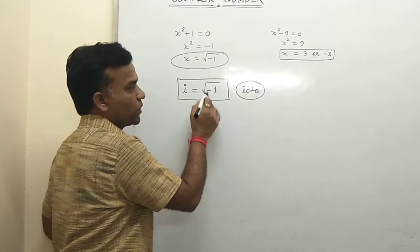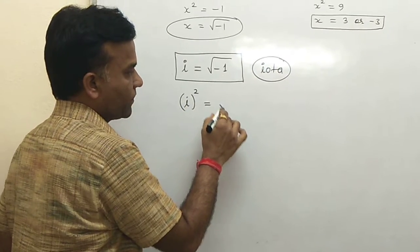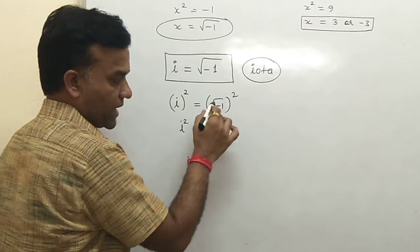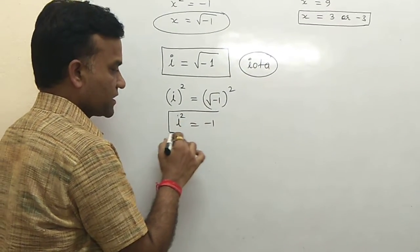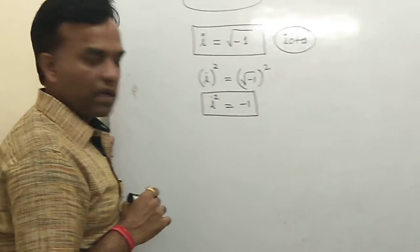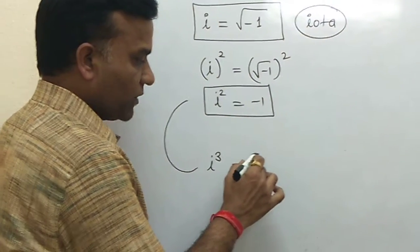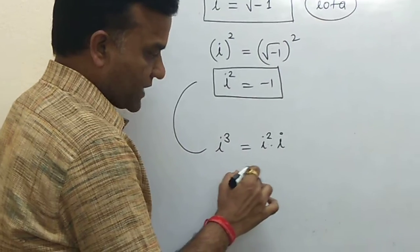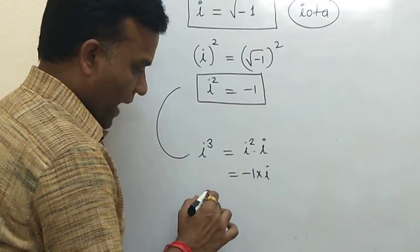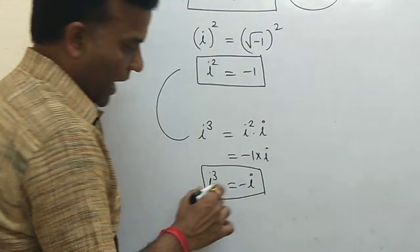Now some properties related to iota: if i = √(−1), then squaring both sides gives i² = −1, because the square root is removed. So wherever you see −1, you can write i² in its place. Then for i³ = i² × i = (−1) × i = −i. So i³ = −i.